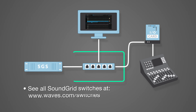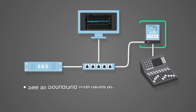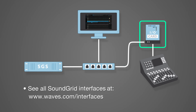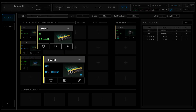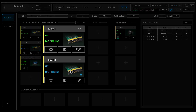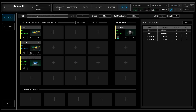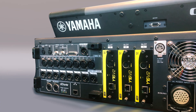Three: a SoundGrid gigabit Ethernet switch. This device links the host computer, I/O devices, and servers. To ensure compatibility with SoundGrid, we recommend that you get your Ethernet switches from Waves. Four: a SoundGrid I/O or a console with SoundGrid-compatible expansion cards. To run audio through the system, you will need to assign at least one SoundGrid I/O device. These range from two-channel preamps to 128-channel MADI interfaces. You can also use a console with a SoundGrid expansion card.